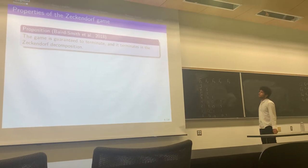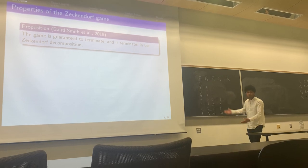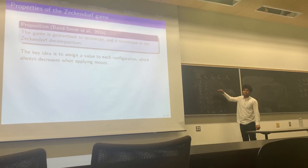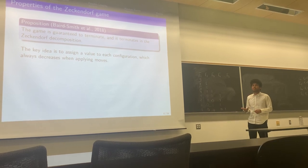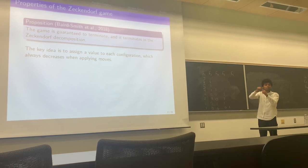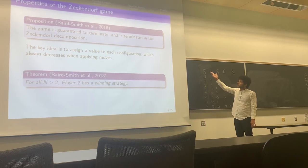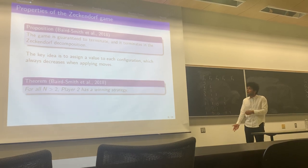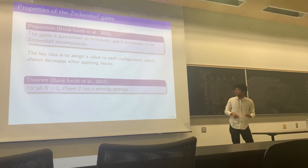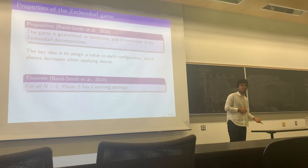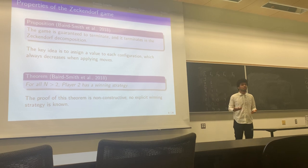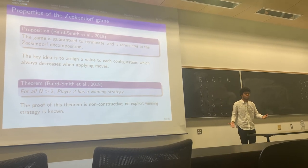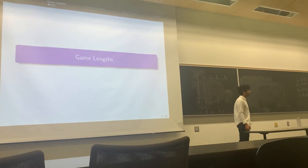Some things we know about this game. First, it is guaranteed to terminate. The idea to prove that it is going to terminate is to assign a value to each of those configurations, and basically all moves decrease this value. Since there are finitely many possible values, we cannot have a loop, and the game terminates at a Zeckendorf position because that's the only game state that you cannot apply a move to. Another property that we have is that for all N greater than two, the second player has a winning strategy. But I like to phrase this a little bit different. I like to say that player one does not have a winning strategy, because that's how they proved it. The proof is non-constructive. You showed that player one cannot have a winning strategy, so as of now, we don't know how player two should play to win.